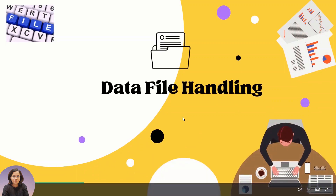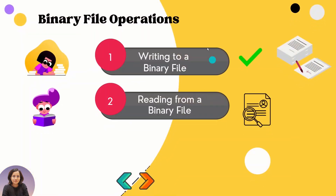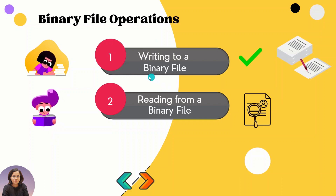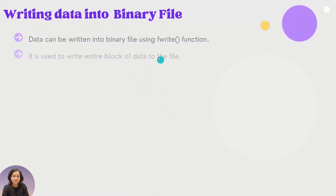Welcome back to the module Data File Handling. As you know, there are two different types of files: text files and binary files. In the previous videos we studied all the file operations on text files. Now it is the turn of the binary file. The two main operations we can perform on a binary file are writing data to it and reading data from it. In this video we are going to study how to write data to a binary file.